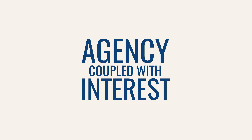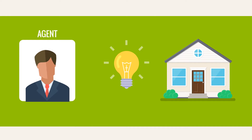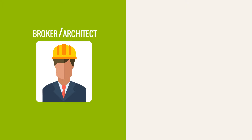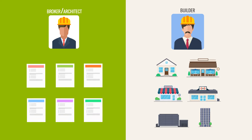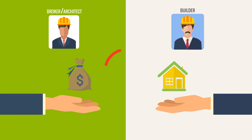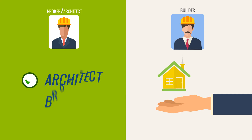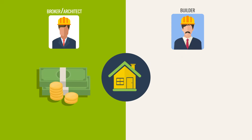Agency coupled with interest can happen when an agent has some kind of interest in the property that is being sold. For example, suppose Joe is a part-time broker. He is also an architect, and he agrees to design some houses for a builder who will give Joe the listing for the finished house. Because Joe made an investment in the project, the builder can't cancel the agreement — it is now an agency coupled with interest. This might sound like a tie-in agreement, which would be a violation of the Sherman Antitrust Act. And this would have been the case if Joe required the builder to hire him as an architect as well as a broker. But Joe isn't making one activity conditional on the other — he is simply offering both services and the builder agreed. In an agency coupled with interest, it is as if Joe is investing in the project.